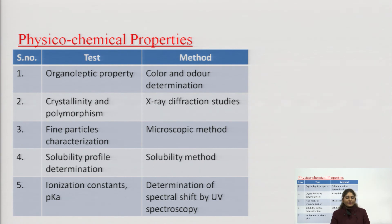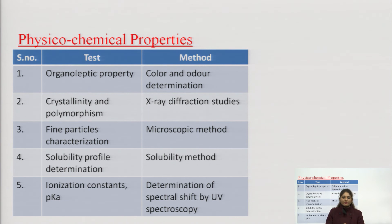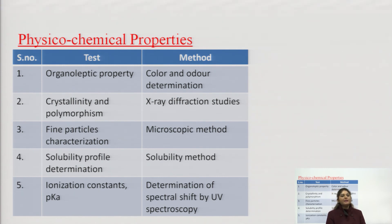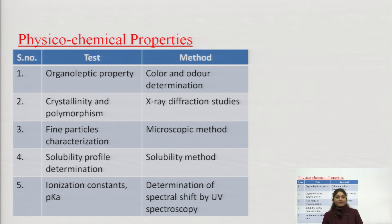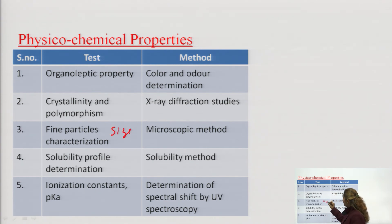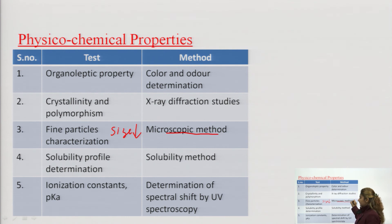Various physical and chemical properties are determined in pre-formulation studies. The first is organoleptic property — color, odor, and appearance are observed. Next is crystallinity and polymorphism, which can be determined by X-ray diffraction studies. Then fine particle characterization is done — the particle size is measured using microscopic methods to ensure it meets the requirements for the specific dosage form.